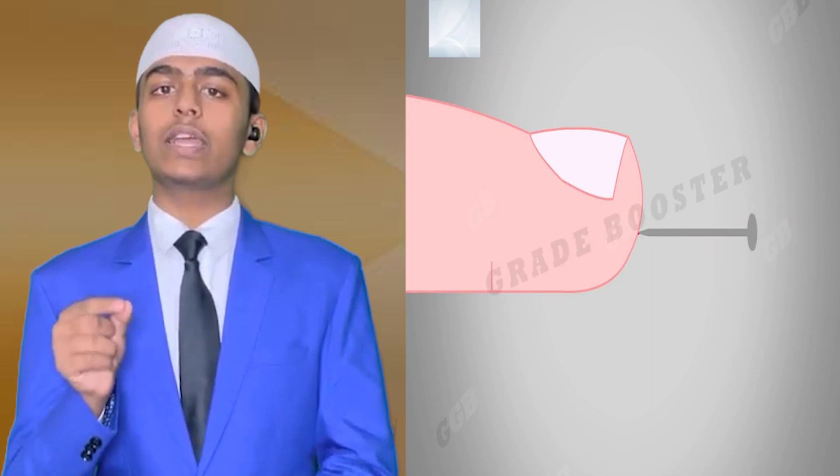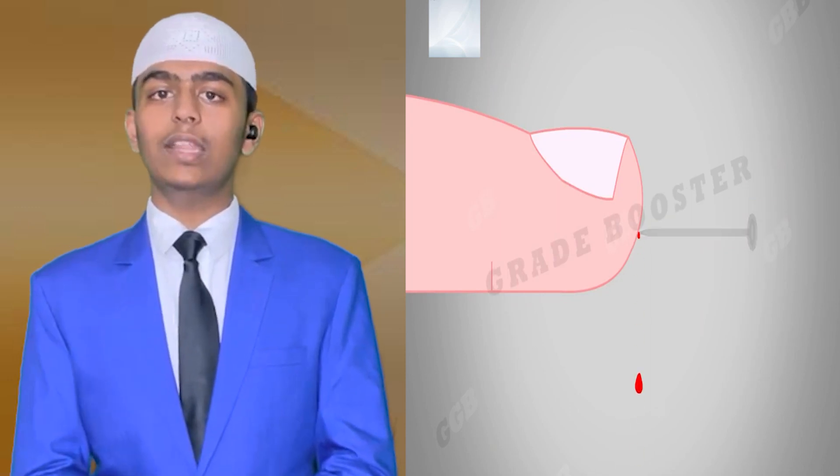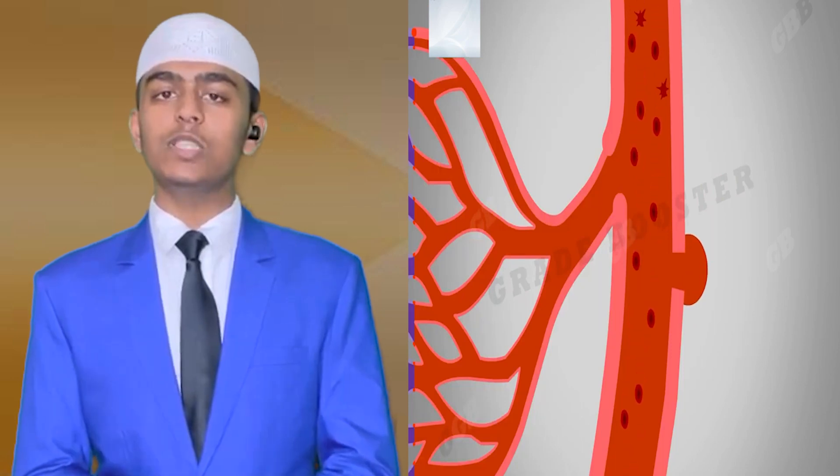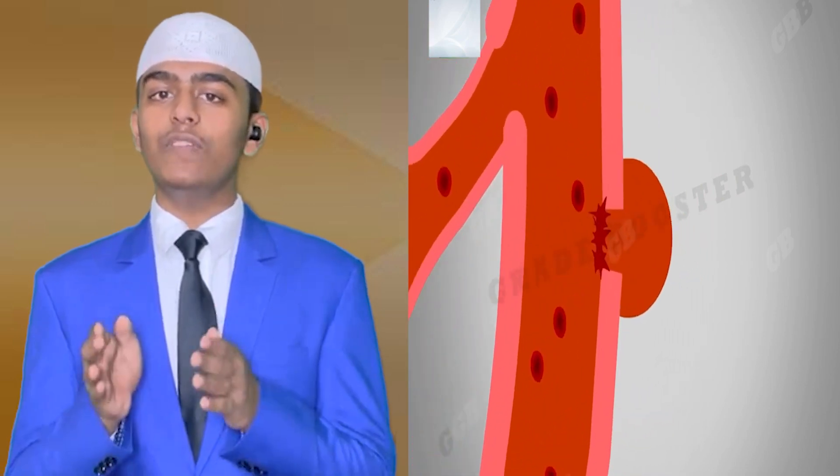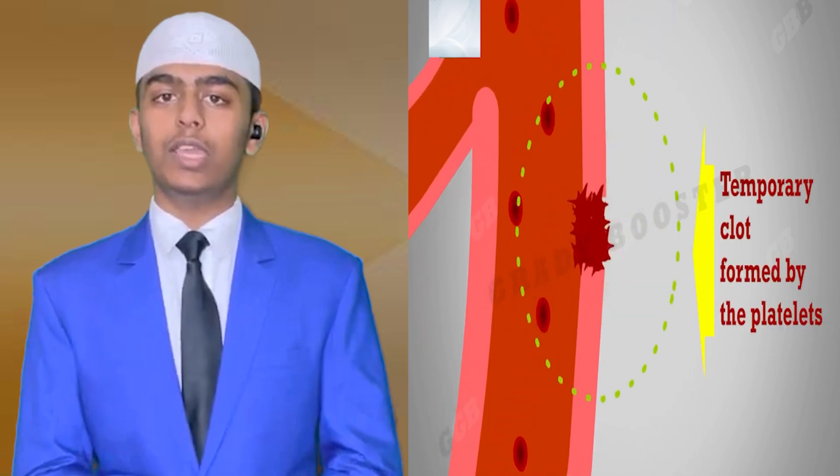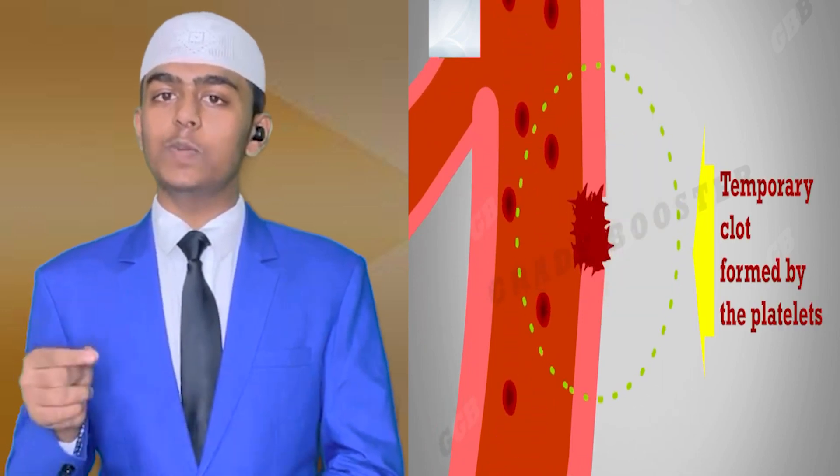If the blood vessels are cut at any point by accident, then there will be a leakage and loss of blood from the body. To prevent this, platelets present in the body migrate to the site of leakage and plug it temporarily. Later a series of events takes place and permanent clotting of blood occurs.